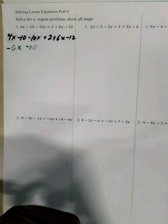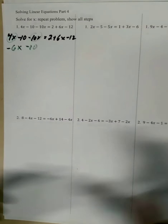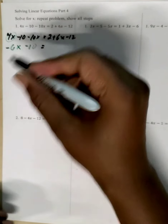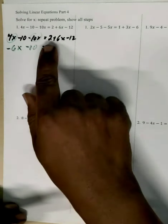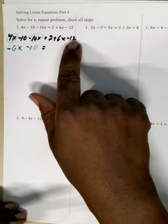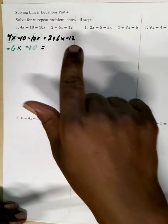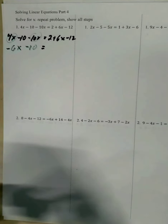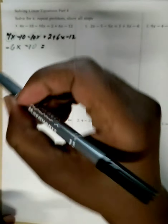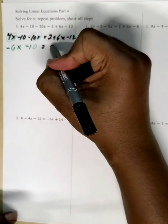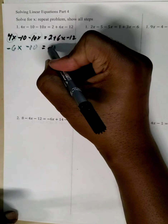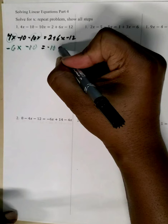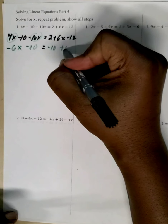On the other side of the equal sign, we have like terms of 2 and negative 12. Those two can be combined — different signs subtract, so 2 from 12 is 10, the bigger sign is negative, so this is negative 10, and then plus 6x.